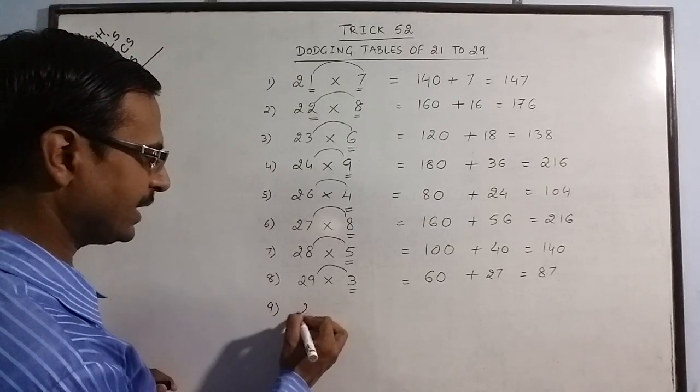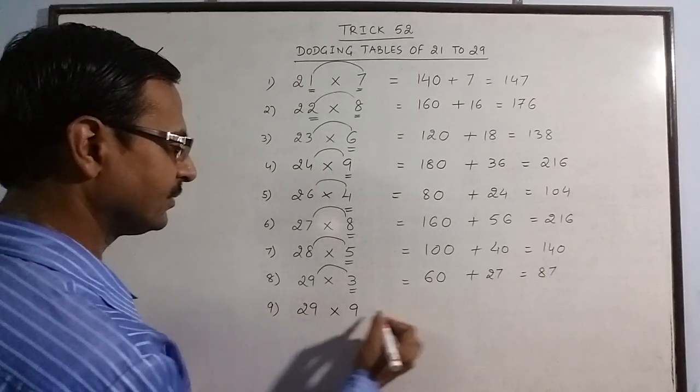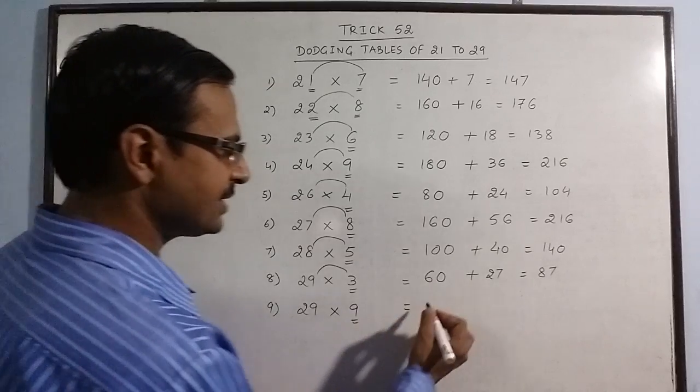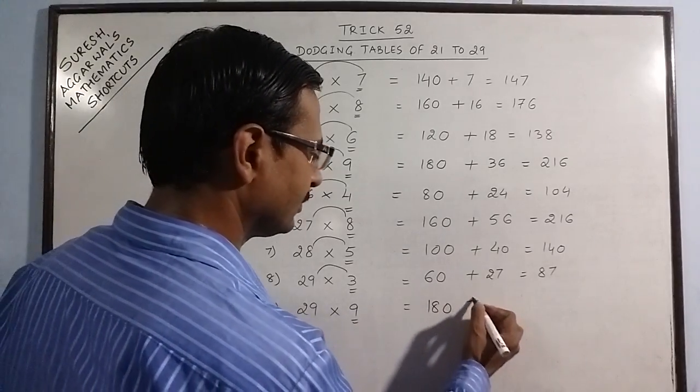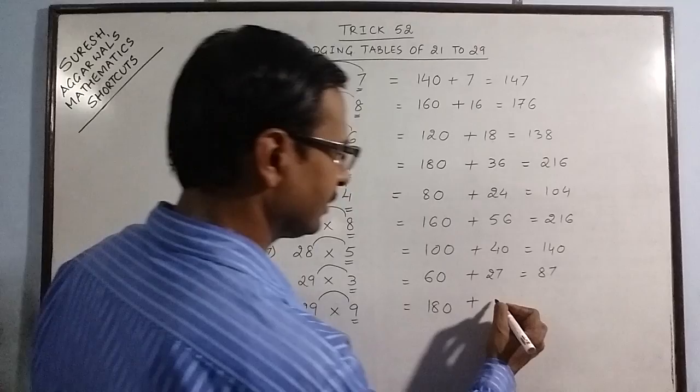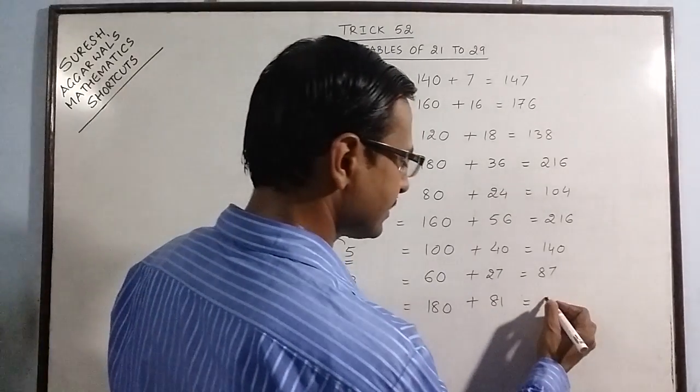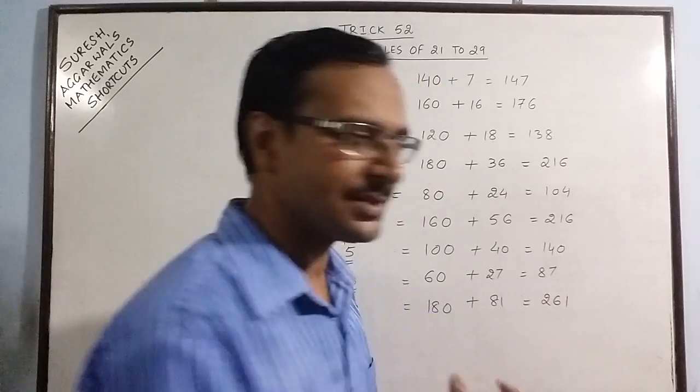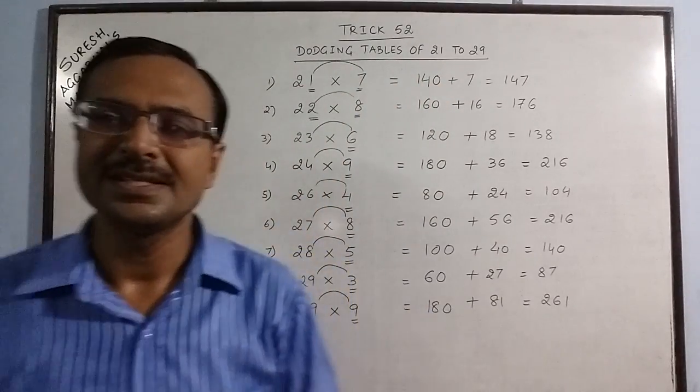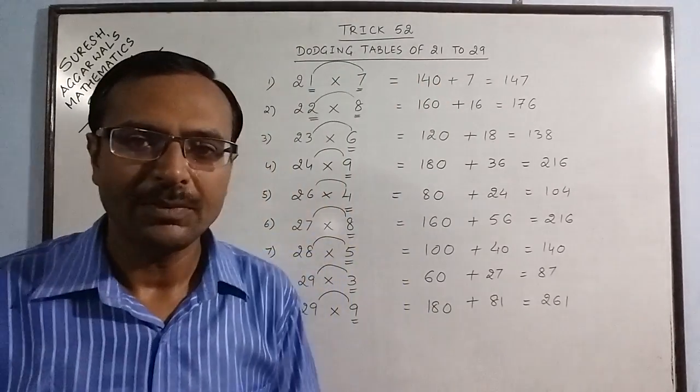More examples: 29×9. Double of 9 is 18, put a 0, 9×9 is 81. 180 plus 81 is 261. See, just 2 seconds time and you can write all dodging tables from 21 to 29.